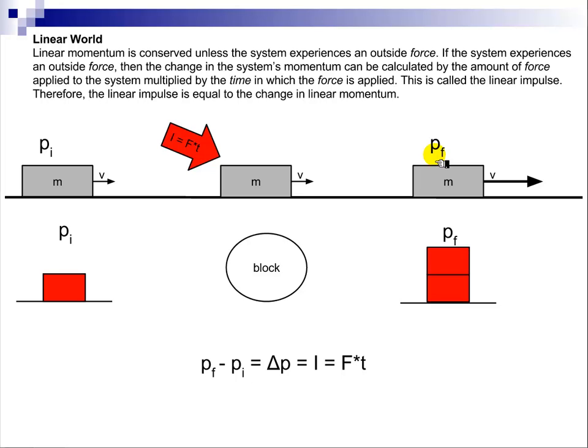momentum is not conserved because we've got an outside force. This force is outside of our system. Notice our block. Our system is just a block. So there's an outside force being applied to our system. So our initial momentum is that amount, and our final momentum is that amount.